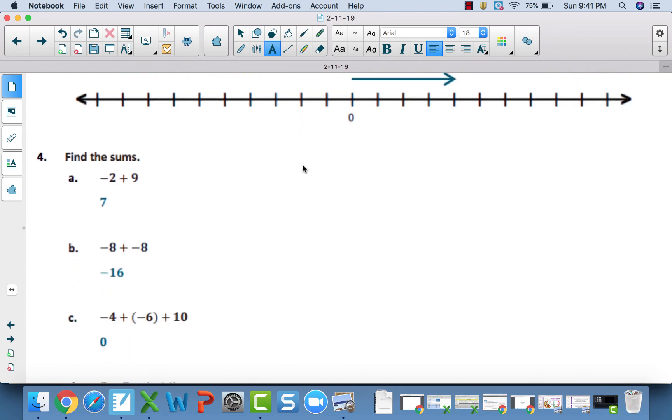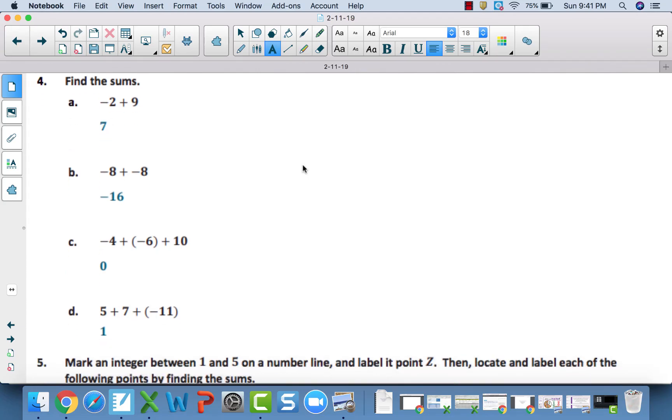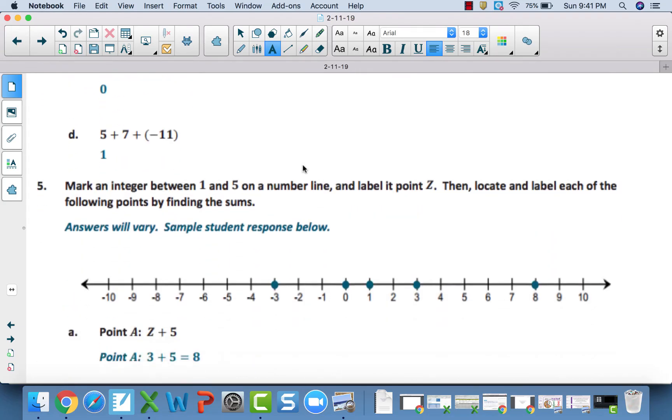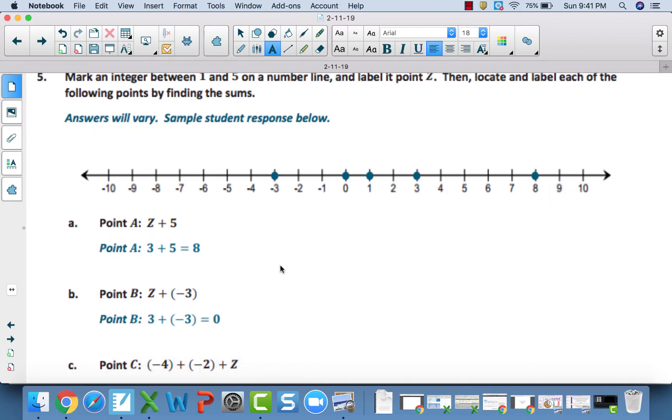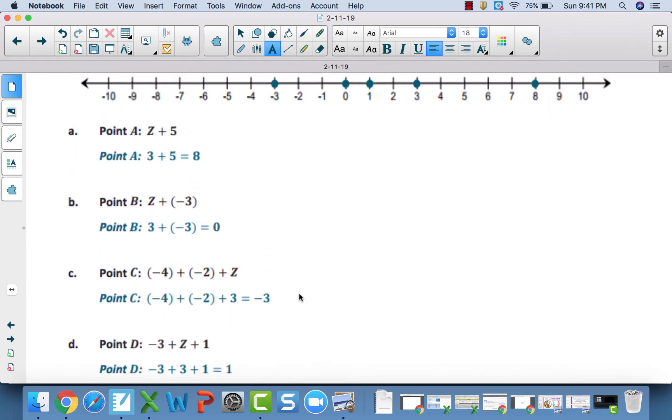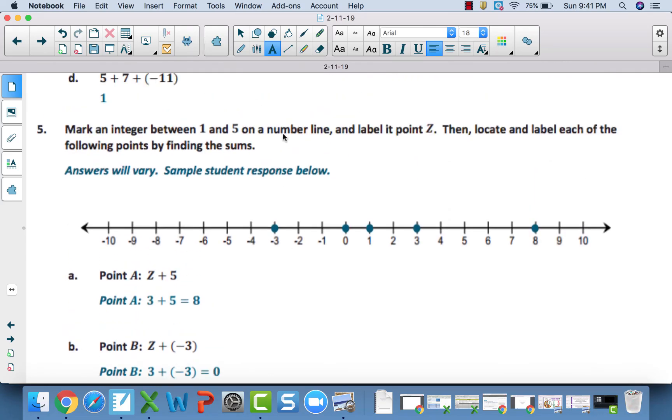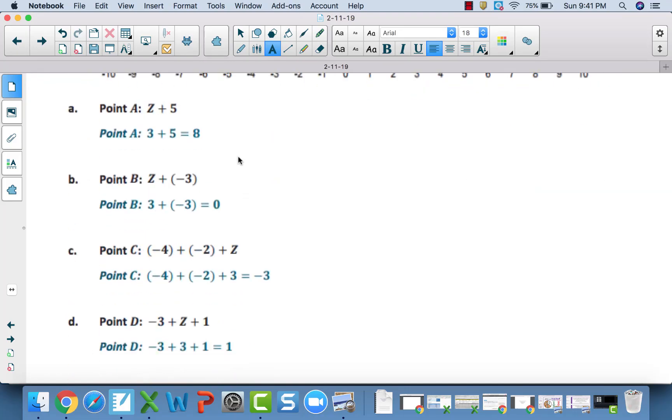Four is seven. Four A is seven. B is 16. C is zero. And D is one. For number five, I picked three as my point Z. Obviously, your answer is going to vary depending on what you picked as point Z. But if you pick three here and what the answers I got, you can see. But obviously, it just depends what you picked. You could have picked two, three, or four. Because you needed an integer between one and five. And the only integers between one and five are two, three, and four. So you should have picked one of those numbers.